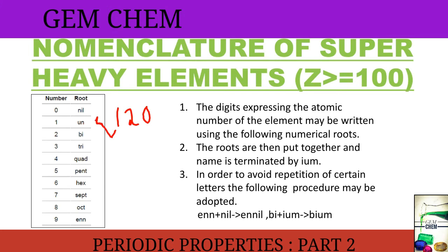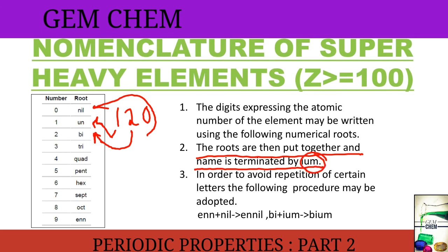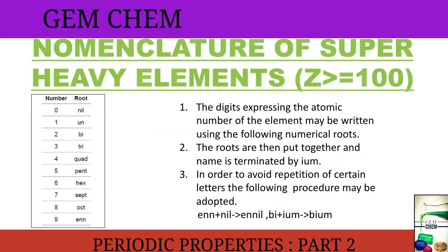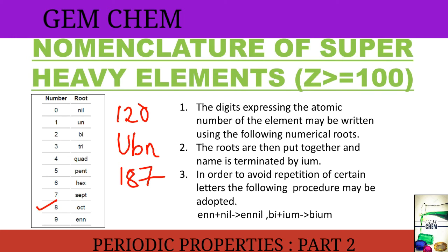For example, if we write 120 — for 1 we use 'un', for 2 we use 'bi', and for 0 we use 'nil' — so it becomes 'unbinilium'. The roots are put together and the name is terminated with '-ium'. So 120 is written as unbinilium, symbol Ubn. For 187: for 1 'un', for 8 'oct', for 7 'sept' — giving unoctseptium, symbol Uos.